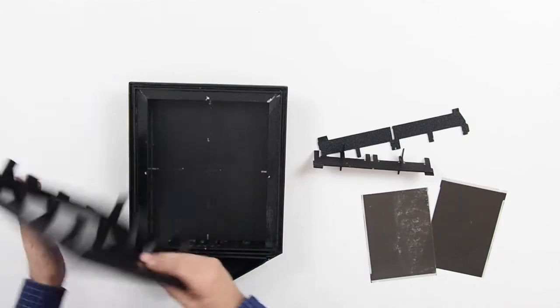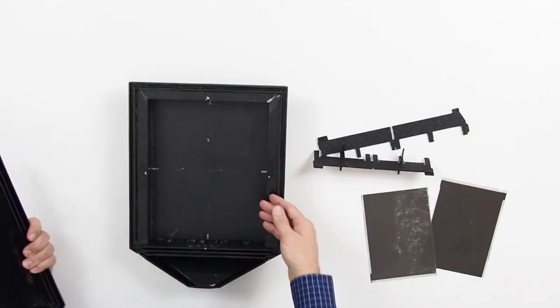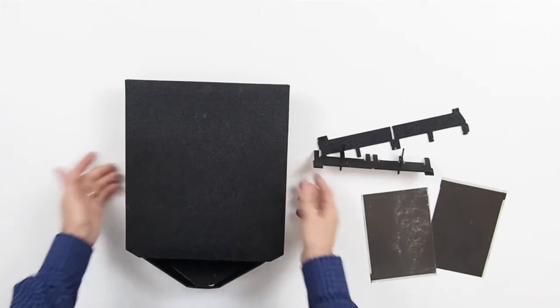This keeps them out of the way when you're loading 8x10 film. You'll just drop the sheet of film in there, put the lid on, and you're ready to go.